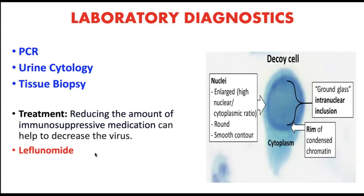Treatment involves continuously checking for viruria, checking for viremia, and reducing the amount of immunosuppressive medication. The most common immunosuppressant used in cases of allografts or transplantation is leflunomide, which is a very potent immunosuppressant.